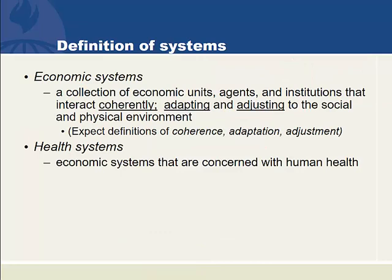They all expect that referee to do what he's doing here in the middle of the field, which is to break up a fight — the fight is a violation of the rules. So now that we have the building blocks, we can define an economic system as a collection of economic units, agents, and institutions that interact coherently, adapting, and adjusting to the social and physical environment. In just a minute, I'll define those three underlined words: coherence, adaptation, and adjustment.